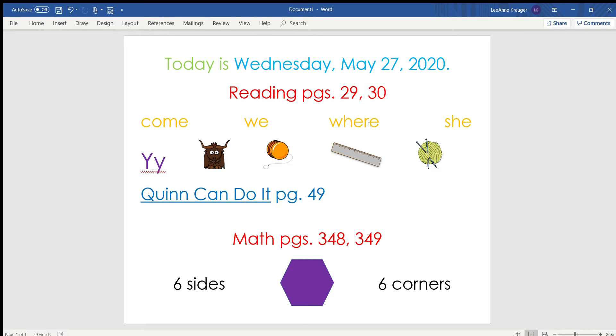We have come, we, where, and she. Maybe you could come up with some sentences to tell mom or dad or brother or sister using those words. And then you'll practice with the letter Y.